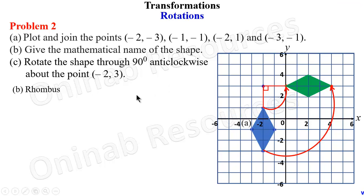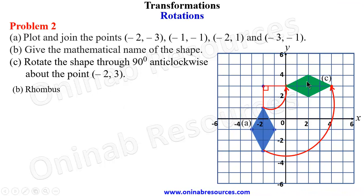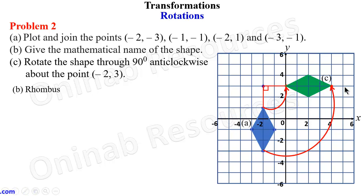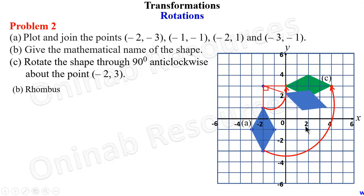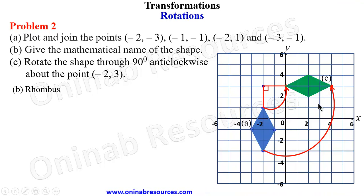We have the object and the image. With this, we are done with problem two — we've done parts a, b, and c. We are not required to give the vertices of the image. If you are using tracing paper, after tracing the shape you rotate it anti-clockwise and stop to get your vertices for the image. That's all for problem two.